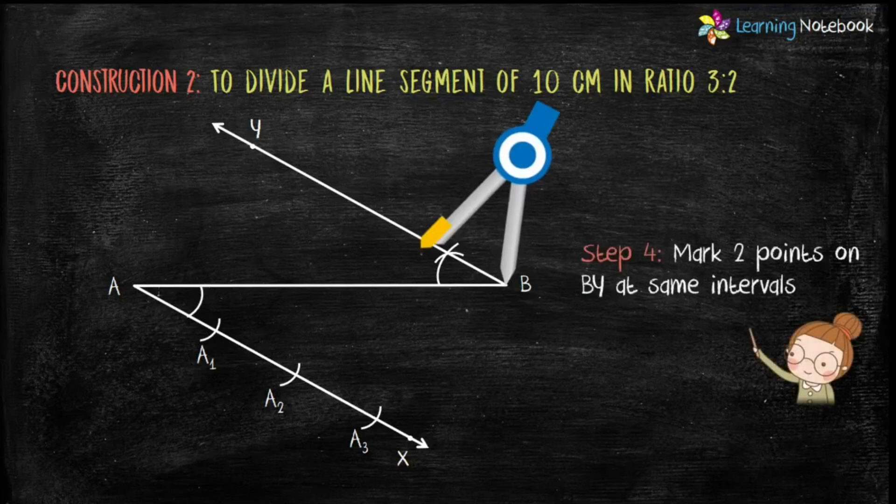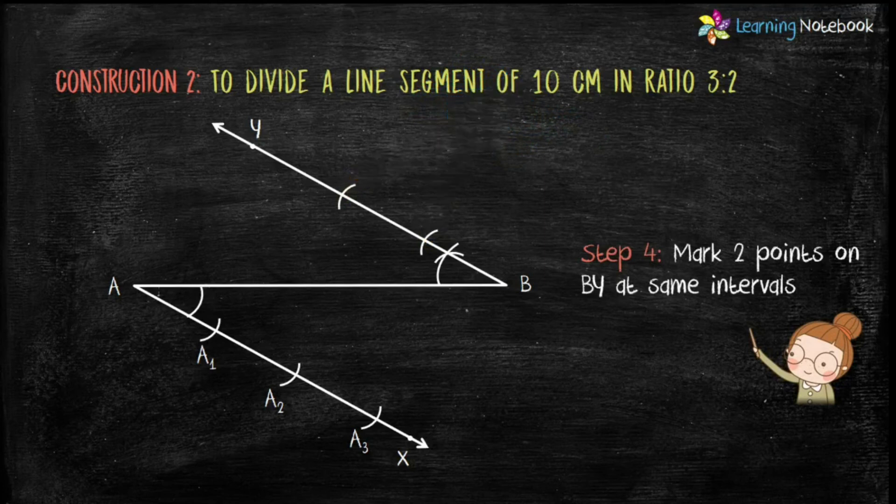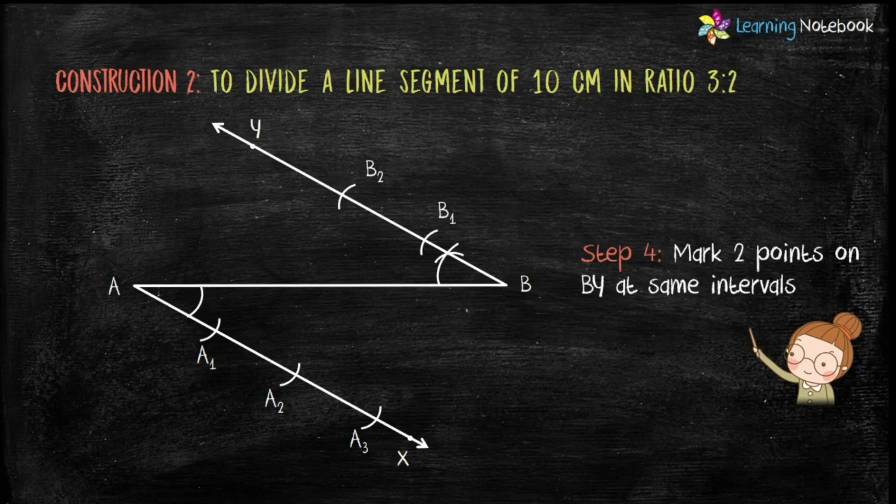Similarly, with same unit, mark 2 points on BY at same intervals and name them as B1 and B2.